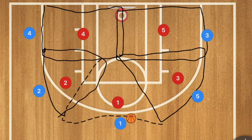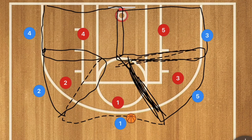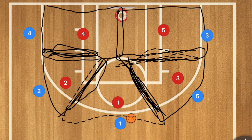As we see here, we have overlapping zones — an overlap here, here, here, here, and here. In those overlap areas, there can be double teams that happen.